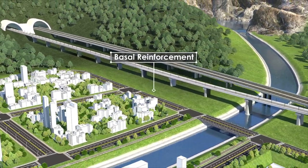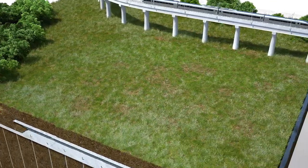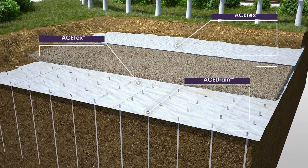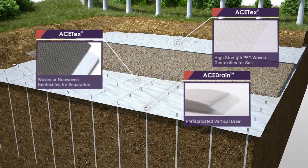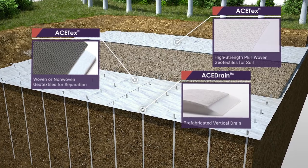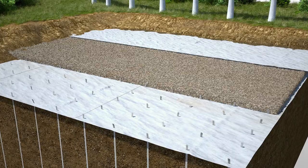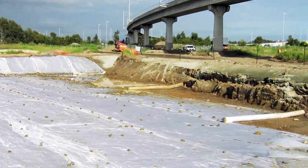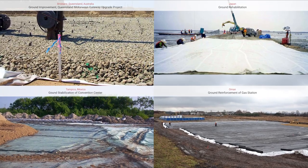Basal Reinforcement: Laying ACE-TEX geotextile on soft ground can effectively increase its bearing capacity. In conjunction with prefabricated vertical drains, it can greatly increase the efficiency of soil consolidation to achieve stable subsidence and increase soil shear strength. This is more effective, economical, and efficient when compared to other soil treatments or soil replacement.